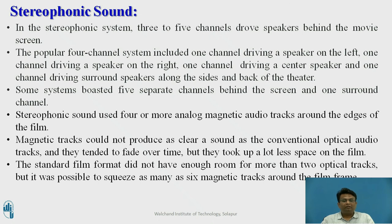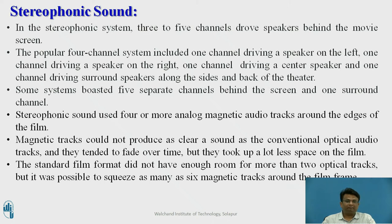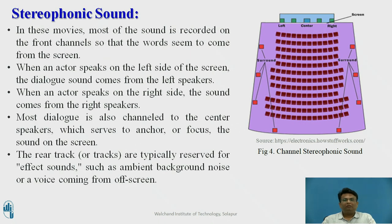In a stereophonic sound system, three to five channels drive speakers behind a movie screen. A popular four-channel system included one channel driving a left speaker, one driving a right speaker, one driving a center speaker, and one driving surround speakers along the sides and back of the theater. Some systems used five separate channels behind the screen plus one surround channel. As seen in the diagram, stereo sound consists of a left speaker, right speaker, center speaker, and surround sound.